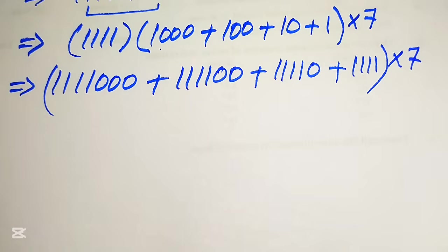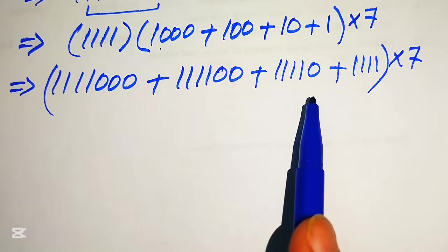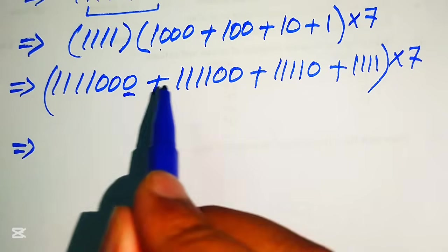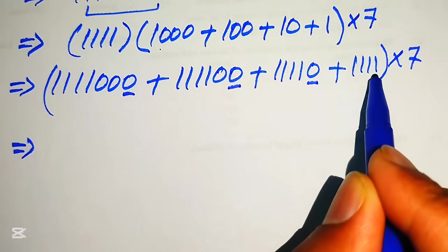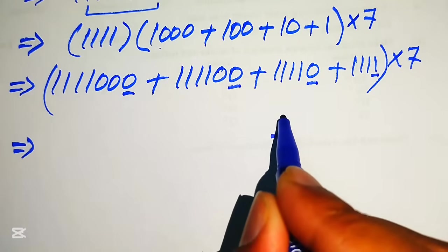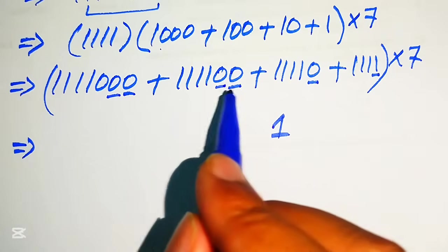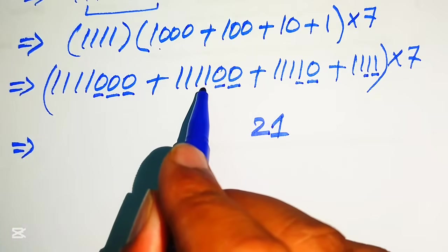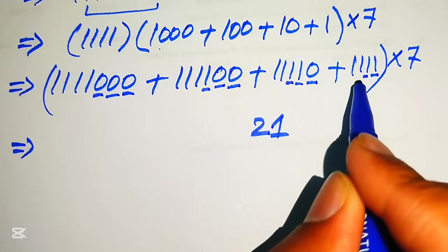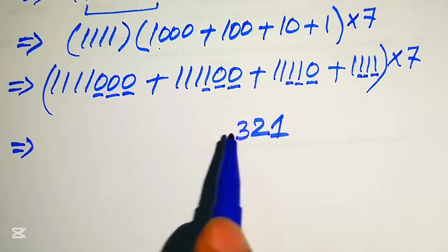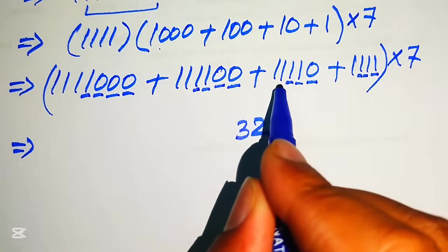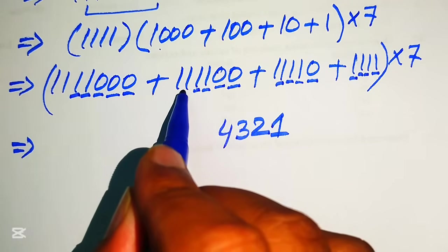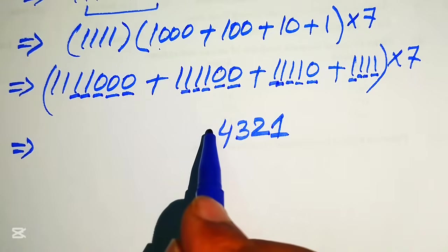Now for proceed further we need to sum up all of these four values. Here we add these four values. When we add this 0 plus 0 plus 0 plus 0 you get 0 and plus 1 equals to 1 and here you have 0 plus 0 is 0, 0 plus 1 is 1, 1 plus this 1 becomes 2. Again you have 0 plus 1 is 1, 1 plus this 1 is 2, 2 plus this 1 is 3 and after that we have this 1 plus 1 is 2, 2 plus 1 is 3, 3 plus 1 is 4.